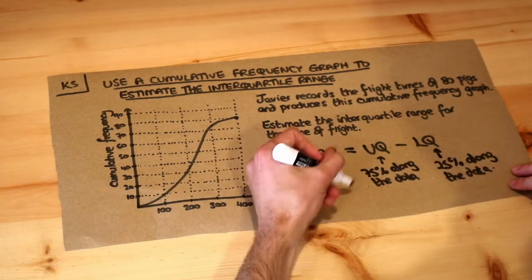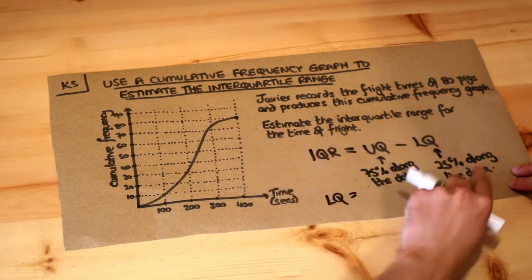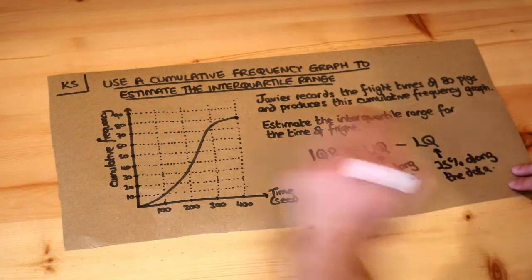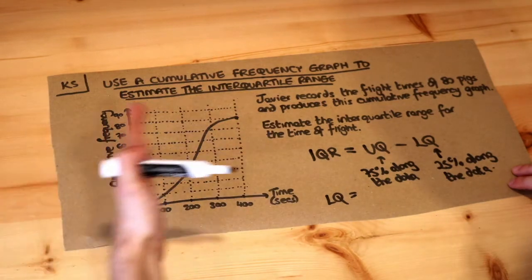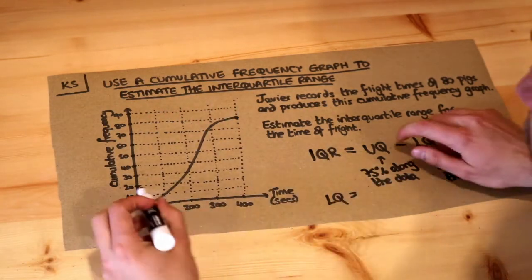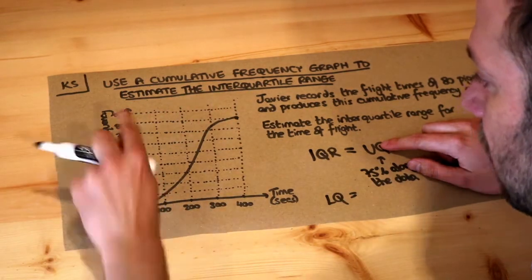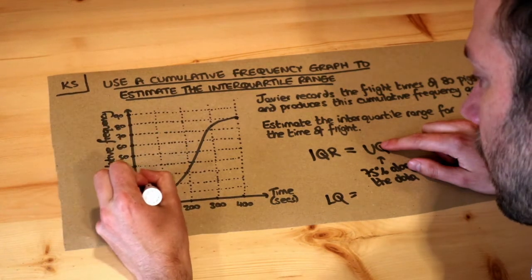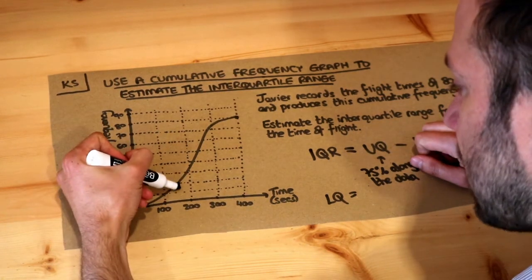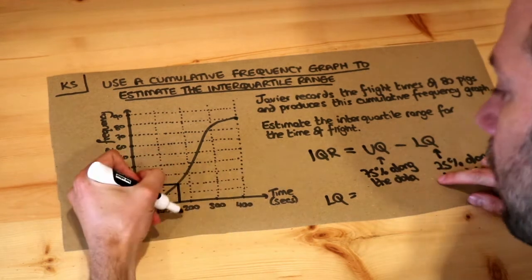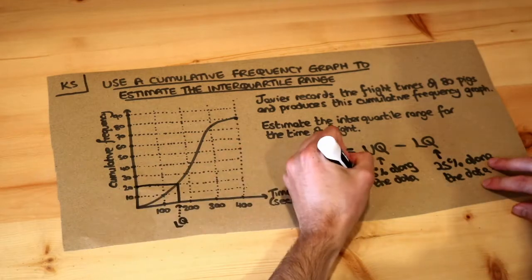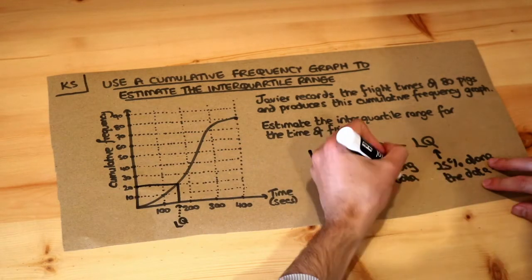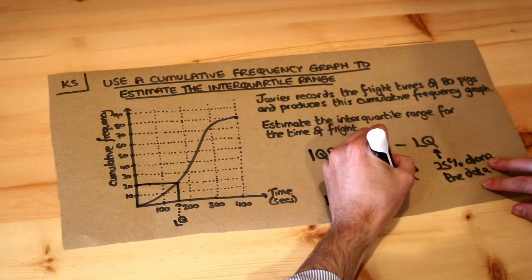Now to find the lower quartile first we want to go 25% along the pigs. Well what's 25% of 80? It's 20. So we want to go to the 20th pig. We go along the 20th pig on the cumulative frequency and then we work our way down and read off that value. So the lower quartile, I'm going to estimate roughly 160 seconds.